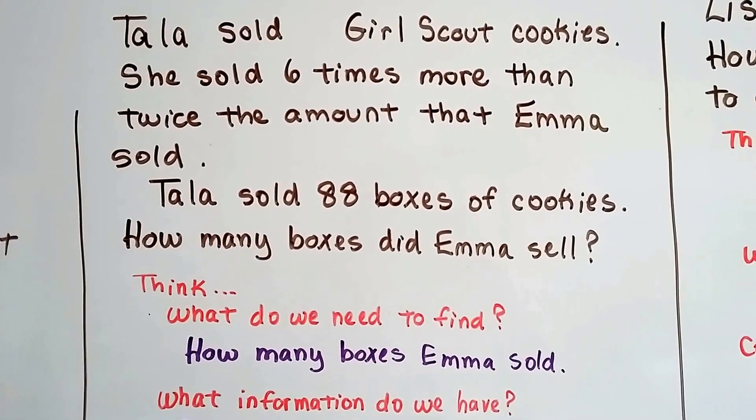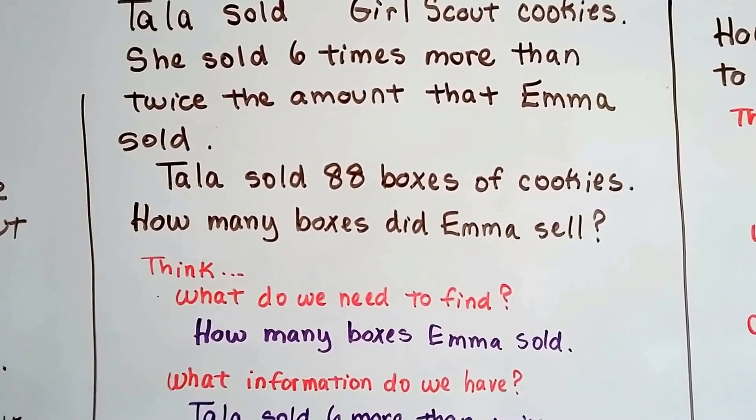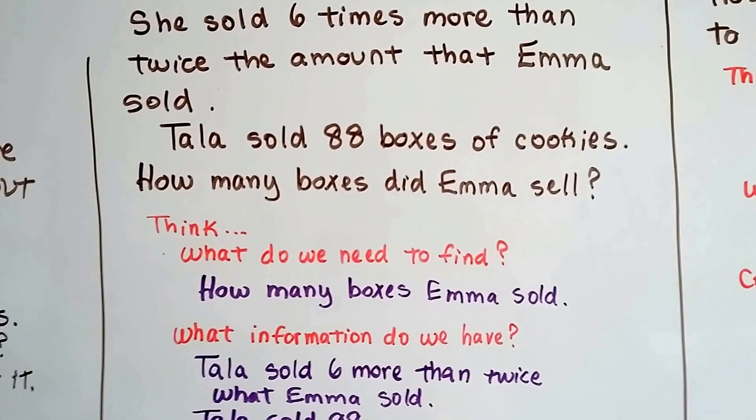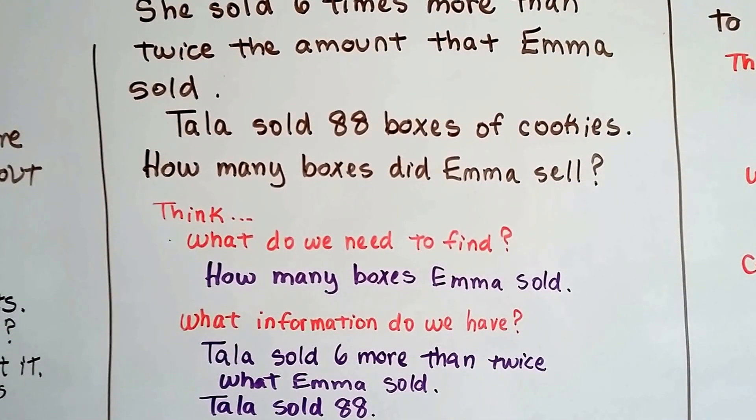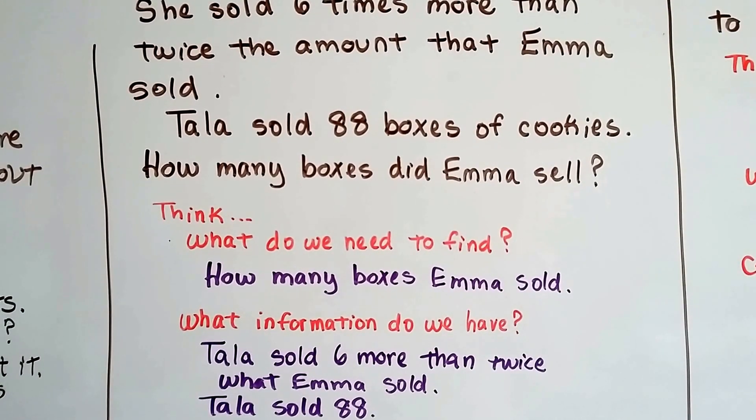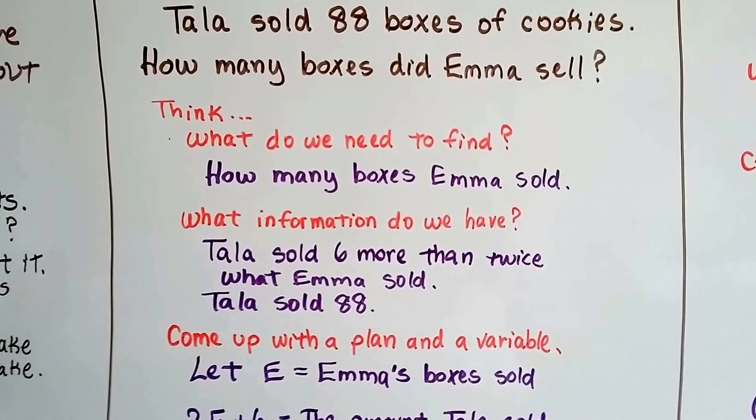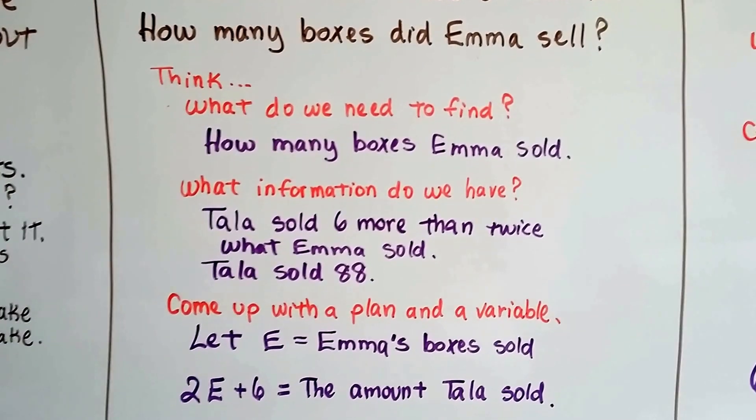What do we need to find? We need to find how many boxes Emma sold. And what information do we have? Well, we know that Tala sold six more than twice what she did and that is going to be a total of 88.